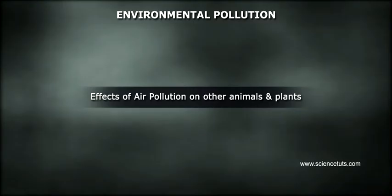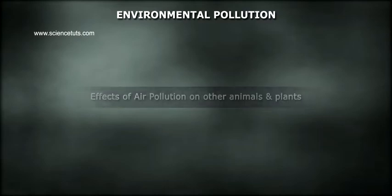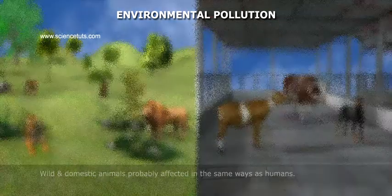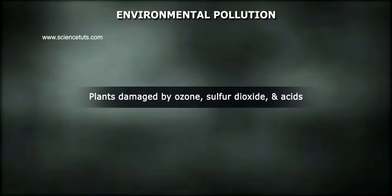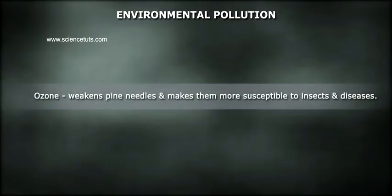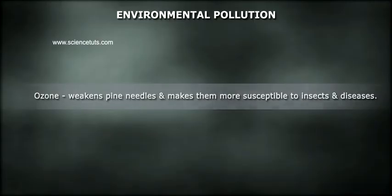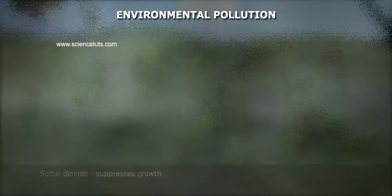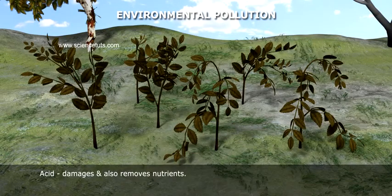Effects of air pollution on other animals and plants: Wild and domestic animals are probably affected in the same way as humans. Plants are damaged by ozone, sulphur dioxide and acids. Ozone weakens pine needles and makes them more susceptible to insects and diseases. Sulphur dioxide suppresses growth. Acid damages leaves and also removes nutrients.